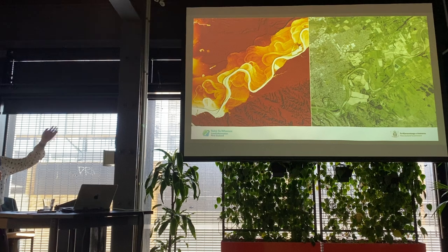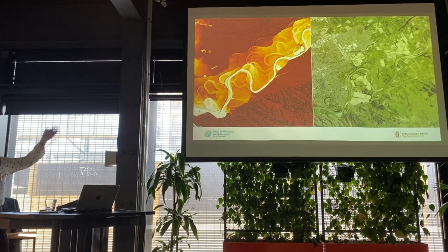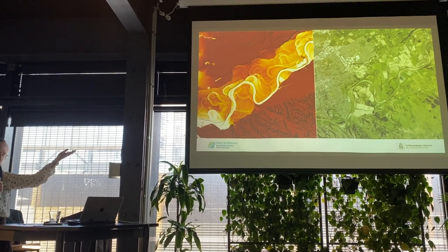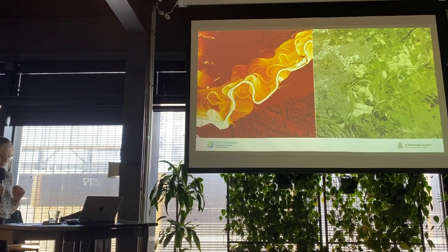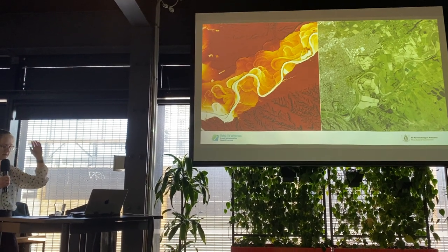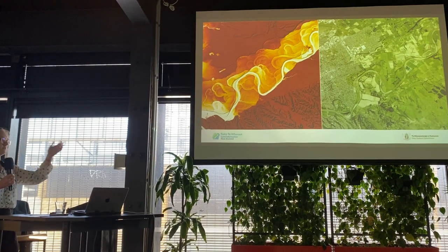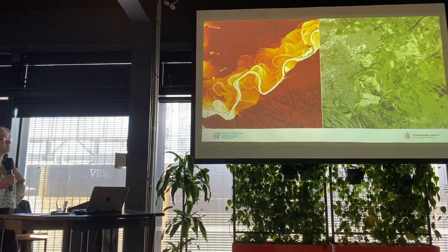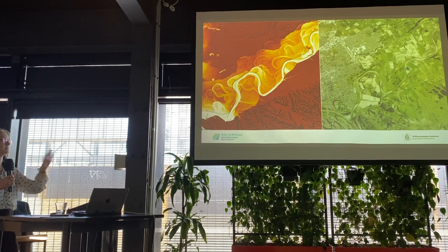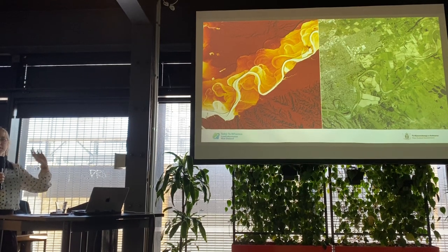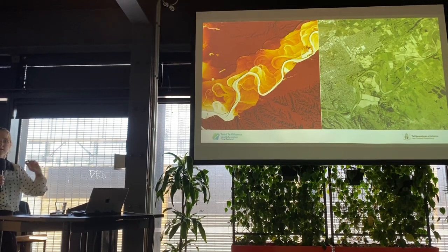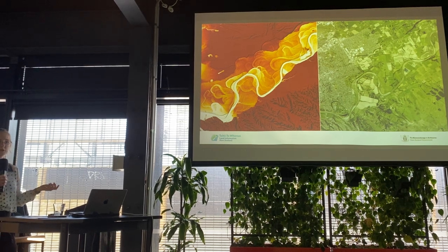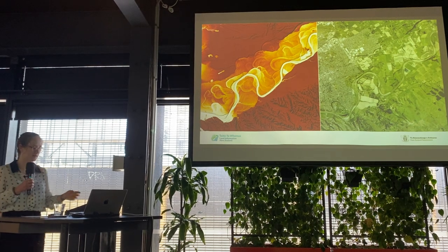The image on the left is a derived product of LiDAR, and the image on the right is aerial imagery. They're the same extents of the Manawatū River in Palmerston North. It just shows really nicely the difference that you get between the two products, and how much more detail and information you can get from LiDAR.